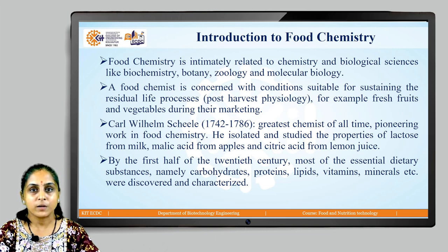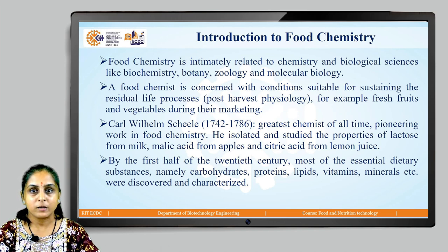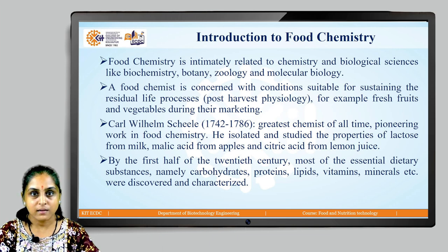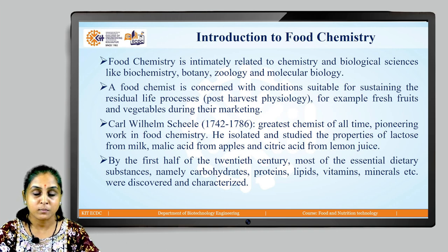Let us quickly look at the history of Food Chemistry. A scientist known as Karl Wilhelm Scheele, within the years 1742 to 1786, did one of the greatest works — he isolated and studied various properties of lactose from milk, malic acid from apples, and citric acid from lemon juice. He was one of the greatest chemists of all time and his pioneering work was in Food Chemistry.